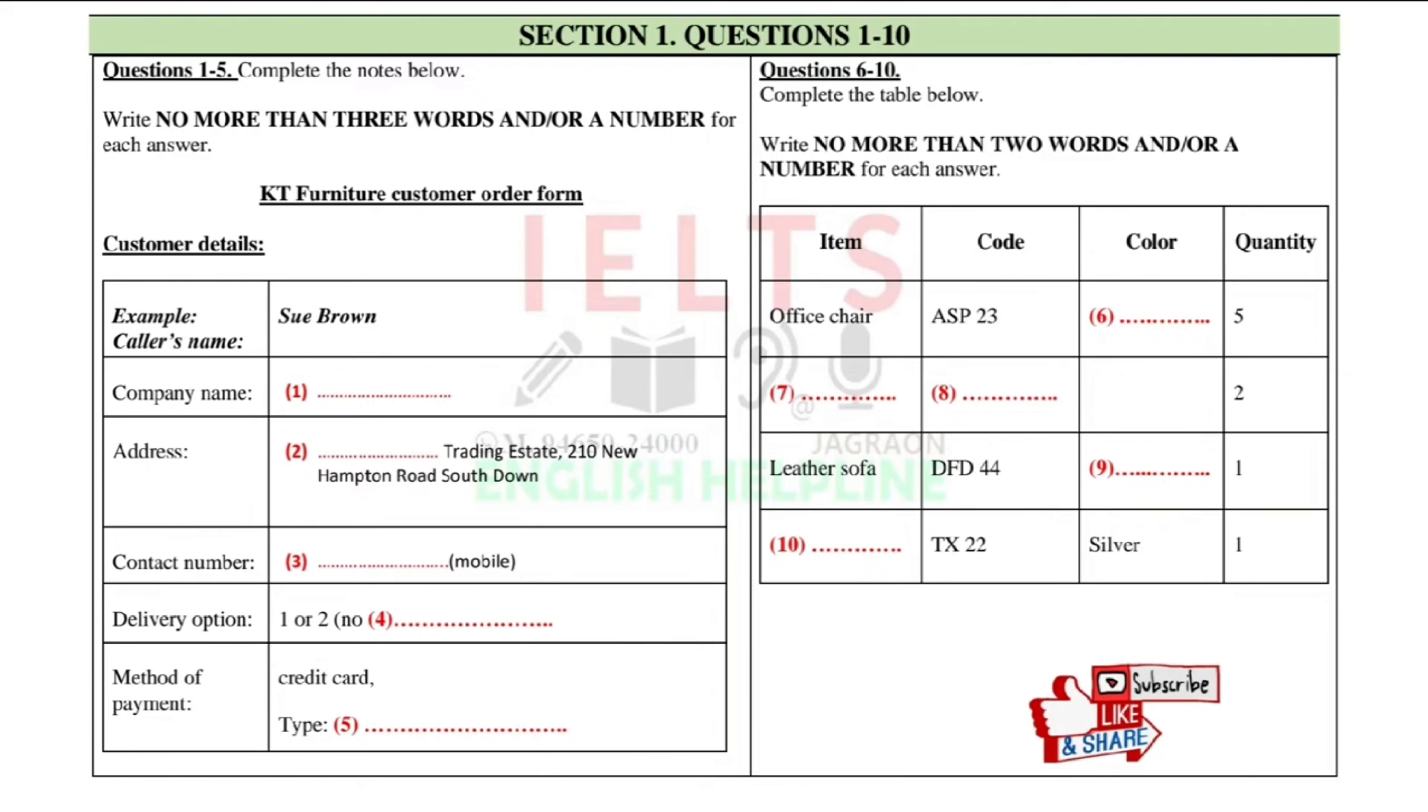Good afternoon, KT Furniture. Can I help you? Oh, hello, yes. I'm setting up a new office and I don't have internet access yet, but I'd like to place an order for some furniture. That's fine. You can do it over the phone and I can fill in the form for you this end. Oh, great. Thanks. I just need to take a few customer details first, if that's okay? Yes, fine.